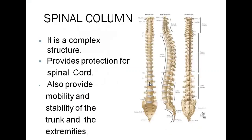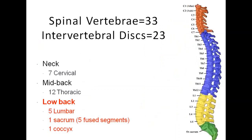Starting with the topic, if you see the spinal column, it is a very complex structure. Its function inside the body is to provide protection for the spinal cord, as well as to provide mobility and stability of the trunk and the extremities. It is just like the base of the body. The movements of all the segments as well as the extremities of the body depend on the spinal segments.